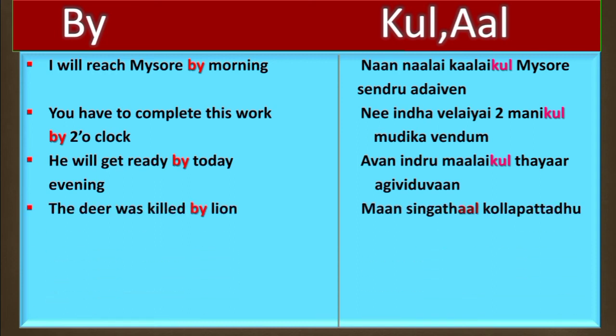The fourth example is: 'The deer was killed by lion.' In Tamil: Maan singkattal kolla pattadu. Here we are specifying the object — the doer of the action. Maan means the deer, singkattal means 'by lion', and kolla pattadu means 'was killed'.